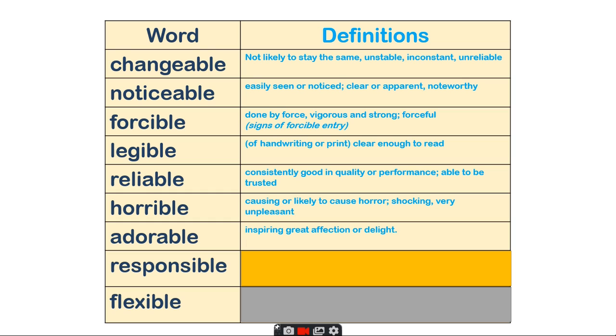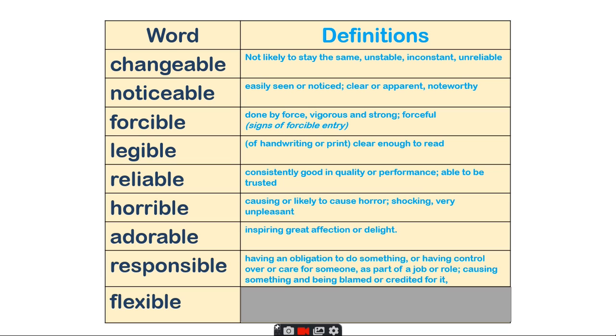Adorable - inspiring great affection or delight. Responsible - having an obligation to do something or having control over or care for someone as part of a job or role, causing something and being blamed or credited for it. And flexible - being capable of bending easily without breaking, and a person being able to change or adapt to different circumstances. We're all being flexible right now through the COVID-19 pandemic.